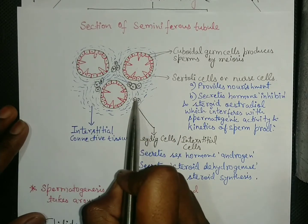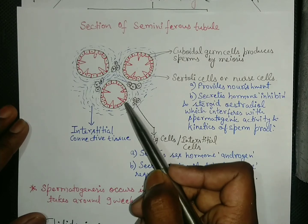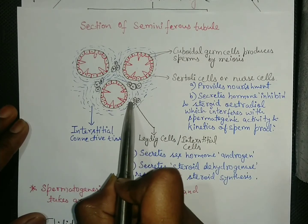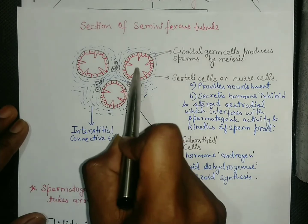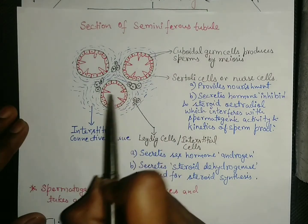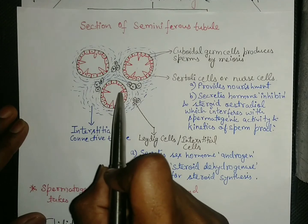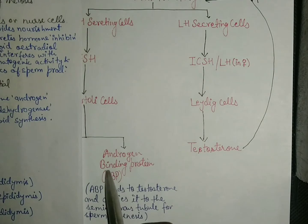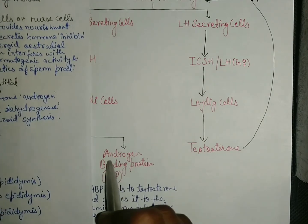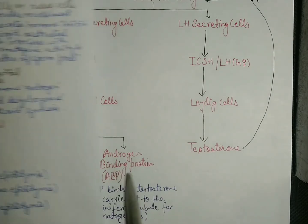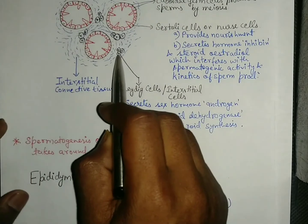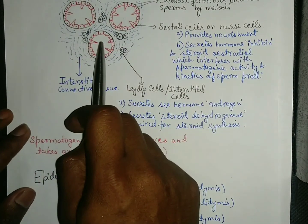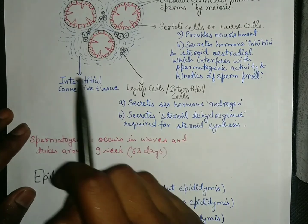The seminiferous tubules are outside the interstitial spaces, but spermatogenesis occurs inside the seminiferous tubules. Therefore, testosterone must also go inside the seminiferous tubules. This is done by ABP, androgen binding protein. ABP binds with testosterone and carries it inside the seminiferous tubules to the site of spermatogenesis.